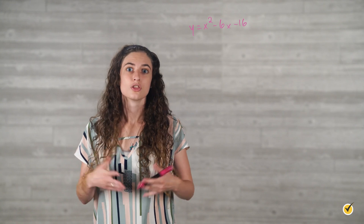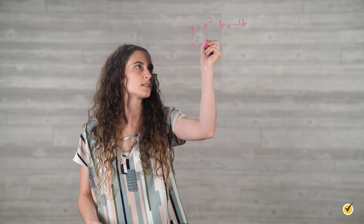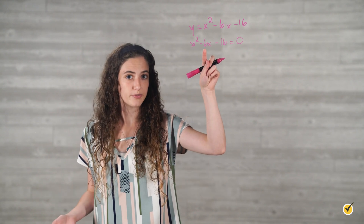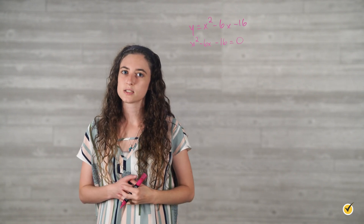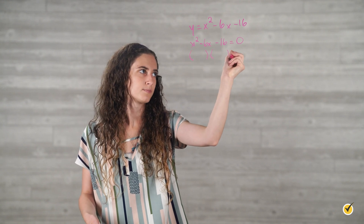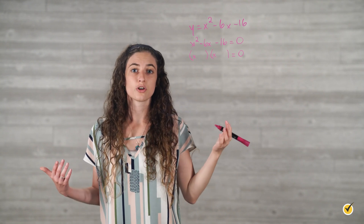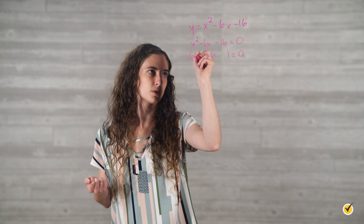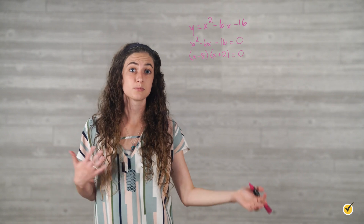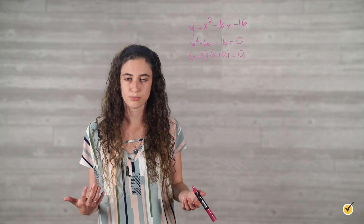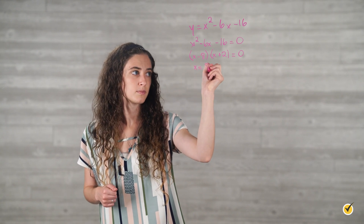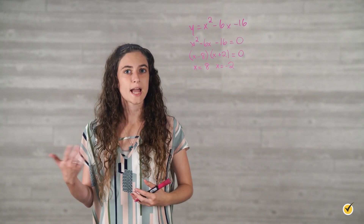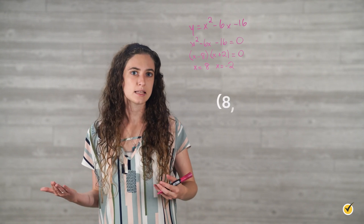Let's take a look at this quadratic function together. The first step is factoring x squared minus 6x minus 16 equals 0. We need two numbers with a sum of negative 6 and a product of negative 16. Those numbers are negative 8 and 2, because negative 8 times 2 equals negative 16, and negative 8 plus 2 equals negative 6. So we factor as x minus 8 times x plus 2 equals 0. Since 8 minus 8 equals 0, x equals 8; and since negative 2 plus 2 equals 0, x also equals negative 2. The x-intercepts are at 8, 0 and negative 2, 0.